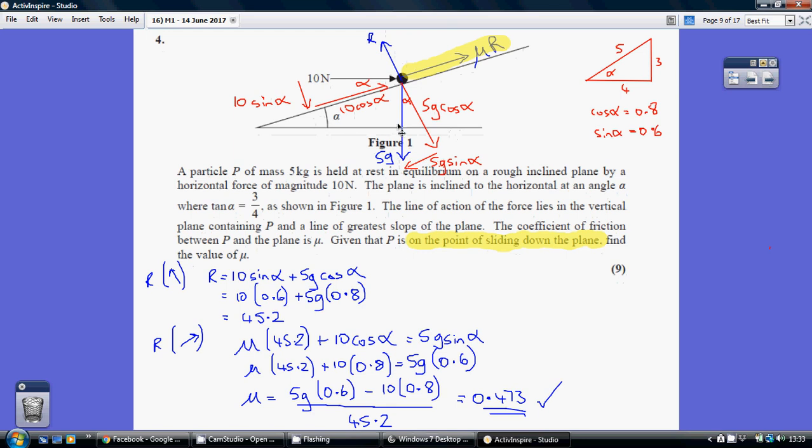So that's alpha. That's 90 degrees there. That would be 90 minus alpha, so that's another alpha. So that force there is 5G sin alpha, as it's opposite, and that's 5G cos alpha.